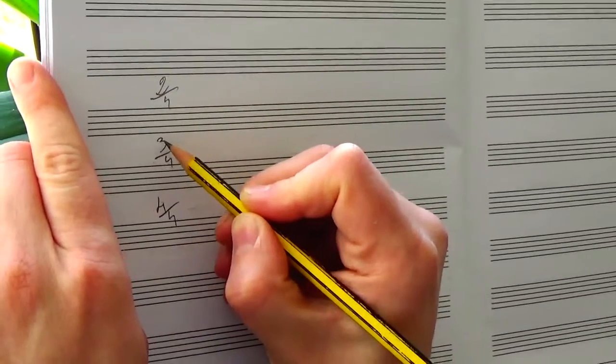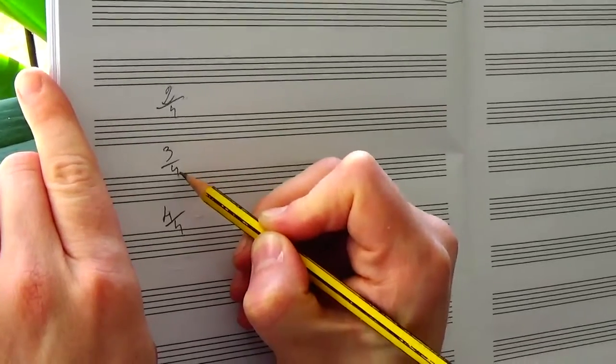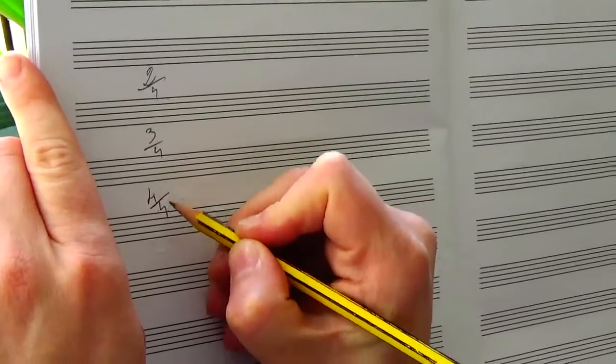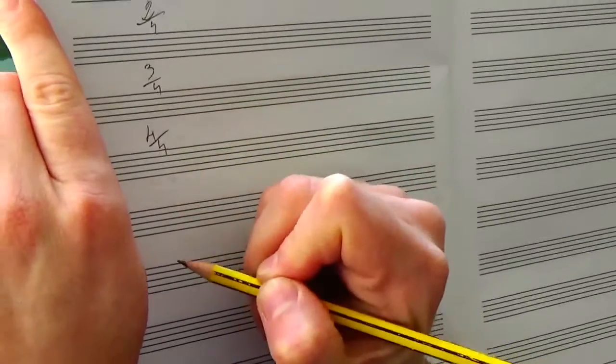Here's the same story. 3 counts each of them is worth 1 quarter note, 1 crochet, or 4 counts worth 1 quarter note, 1 crochet.